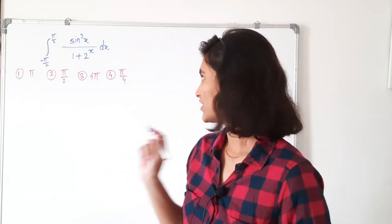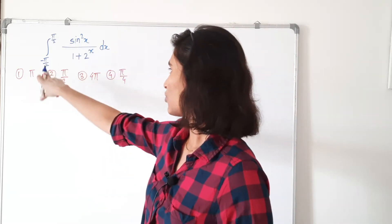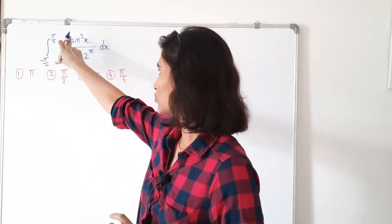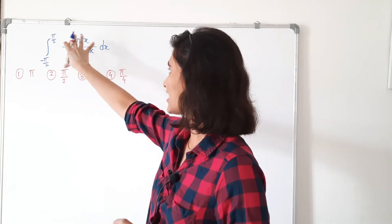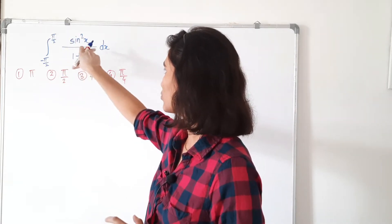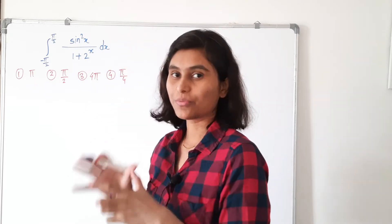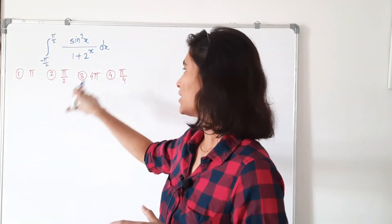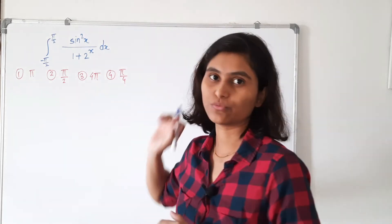Now let's solve this question. It is the integration from minus π/2 to π/2 of the function sin²x divided by 1 plus 2 raised to x dx, and the options are π, π/2, 4π, and π/4.